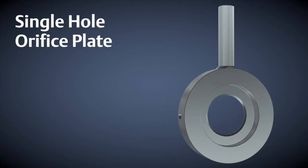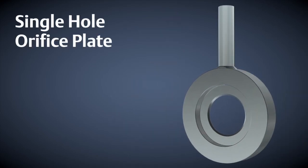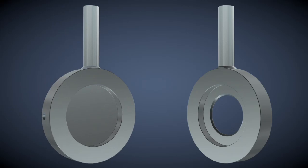Traditionally, DP flow measurements have been made with a single hole orifice plate. In a conditioning orifice plate, there are four holes that are equally spaced in an annular ring in the plate.